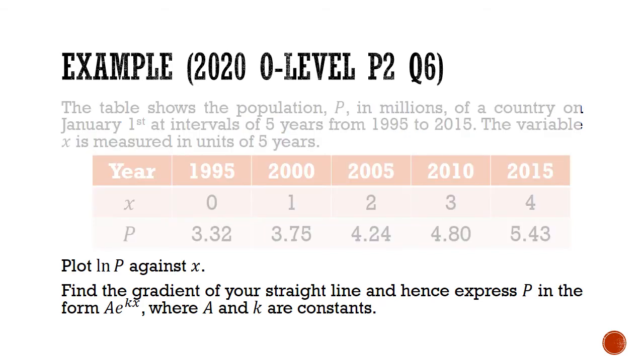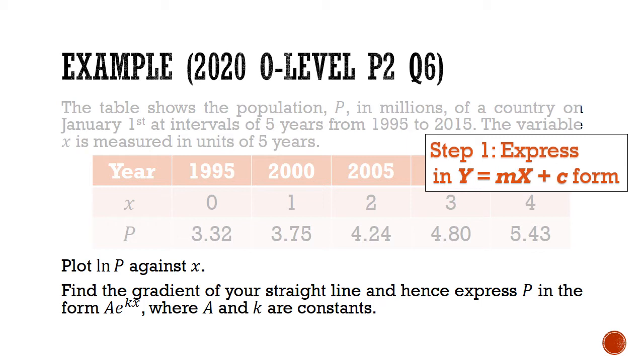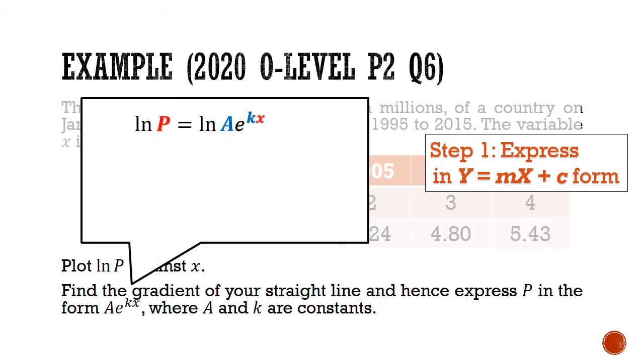The first step would be to try to express the model in the form of y equals mx plus c. Since we know that P is equal to A times e to the power of kx, we can take ln on both sides. Then we can split the right-hand side using the product law. We will get ln A plus ln e to the power of kx. We can bring the power kx down as the coefficient using the power law.